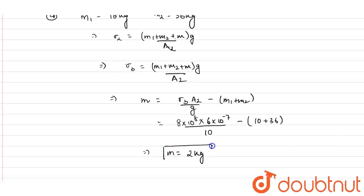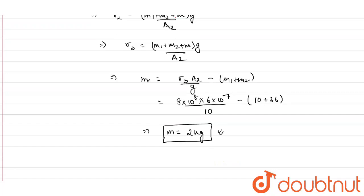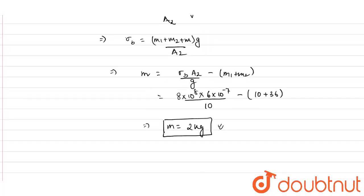So when m2 = 36 kg, the maximum mass that can be put on the hanger is 2 kg.